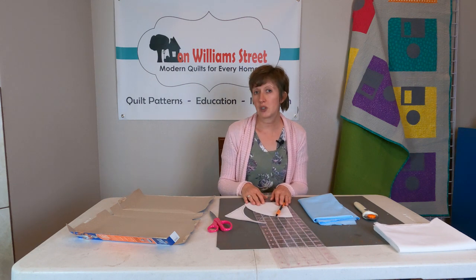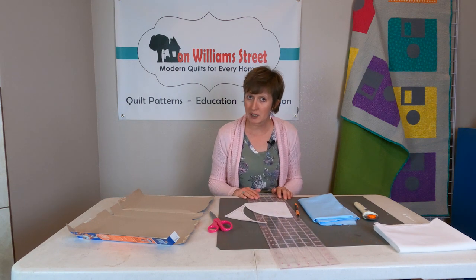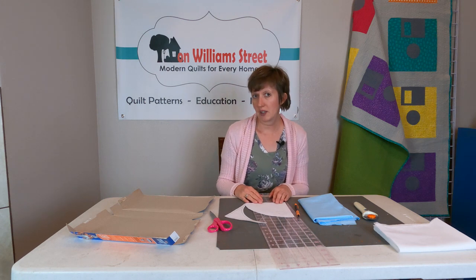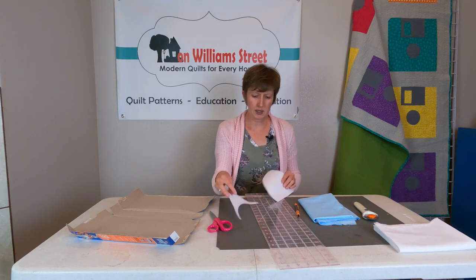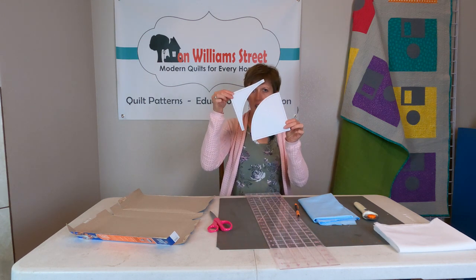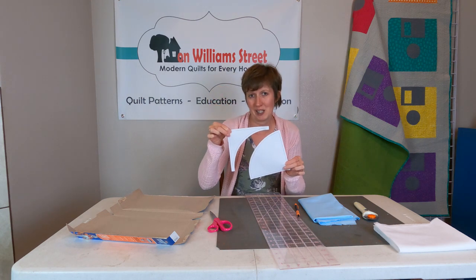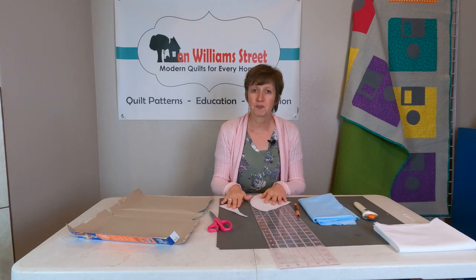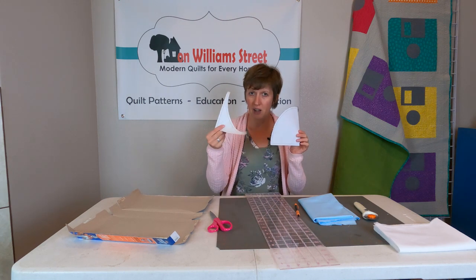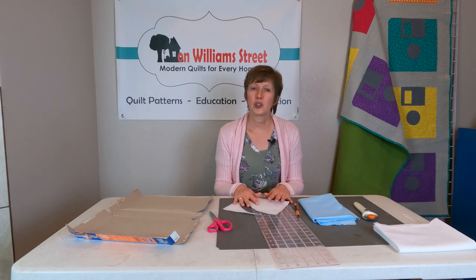So we are going to be printing out the template that has the drunkard's path blocks on it, the smaller ones. These are the smallest of all the templates that we're going to use in this quilt. So you'll print those out and then just go ahead and cut that out and I'm going to show you some really simple ways to trace those onto your fabrics and cut them.